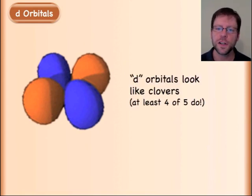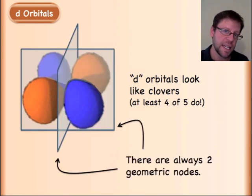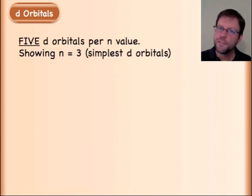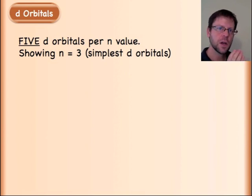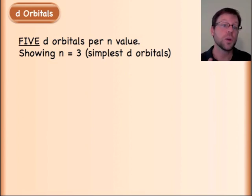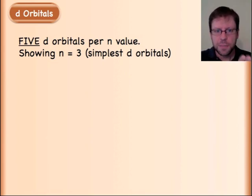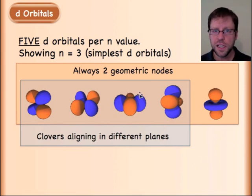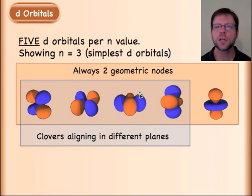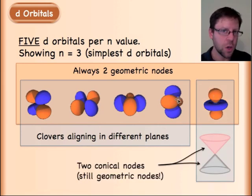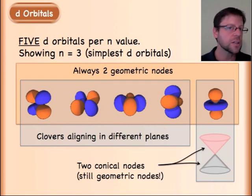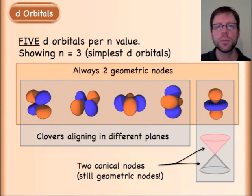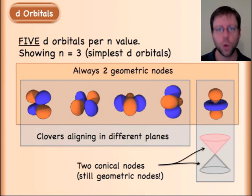Now we have d orbitals — we say these look like clovers. There's a pattern emerging: one s orbital, three p, five d, and it will be seven f — jumping up by two each time. D orbitals always have two geometric nodes. Four of the five look like four-leaf clovers in different orientations, and then there's one that looks almost like a p orbital with a donut around it, justified by two conical nodes. Each can hold two electrons, so five d orbitals hold ten electrons total.